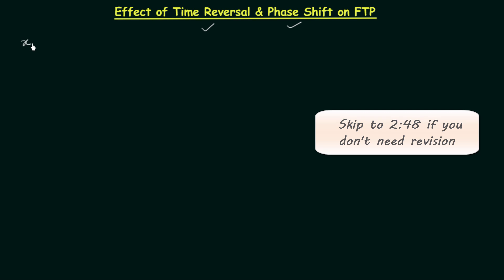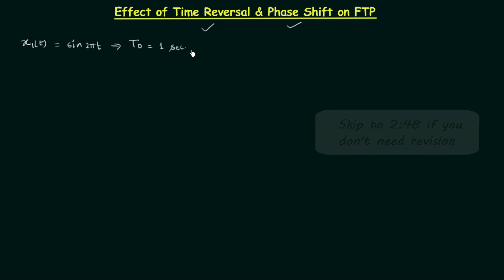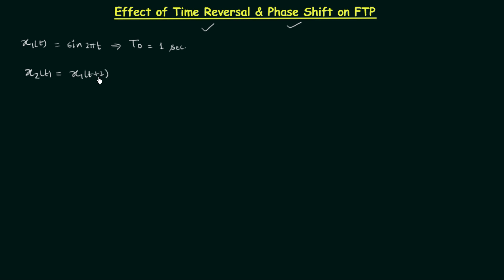In the last lecture we took one signal x1(t) which was equal to sin(2πt). We calculated the fundamental time period and it was equal to one second. After which we performed the time shifting. We had a new signal x2(t) which was equal to x1(t+2), giving sin(2π(t+2)), which we can write as sin(2πt + 4π). From here we also got the fundamental time period as one second, because ω₀ is 2π in both cases.